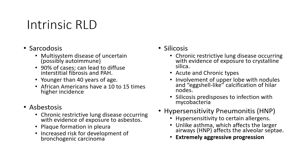Sarcoidosis is a multi-system disease that occurs a little earlier in life and is more common in African Americans. It presents with similar interstitial fibrosis, but has a known — possibly autoimmune — cause. Asbestosis results from asbestos exposure and creates a chronic restrictive disease. It more commonly affects the pleura as well, with pleural plaque formations distinguishing it from other conditions. Asbestos exposure also increases the risk for lung carcinoma.